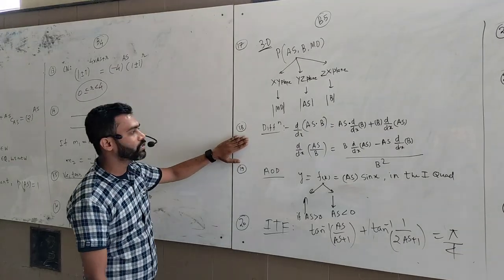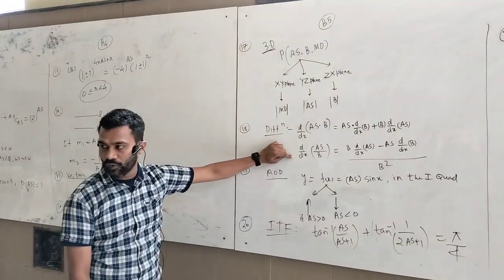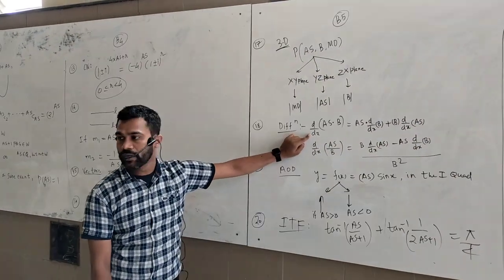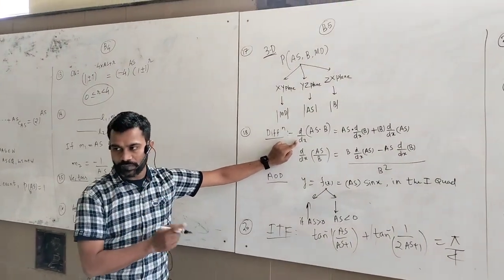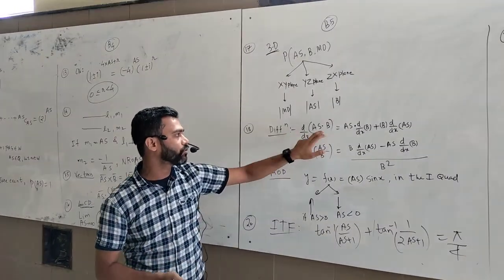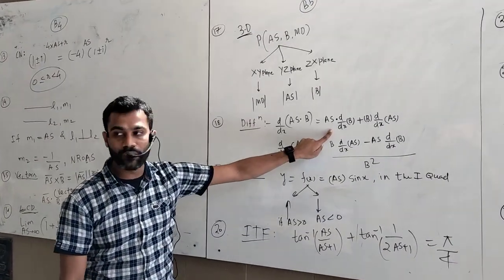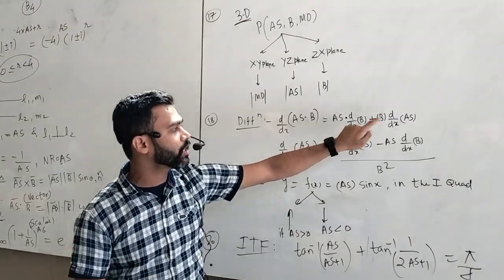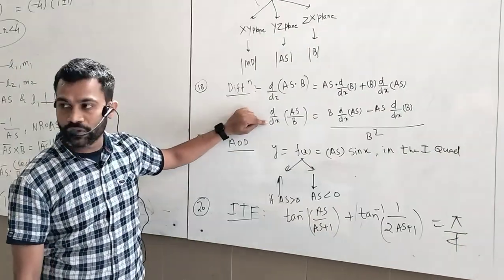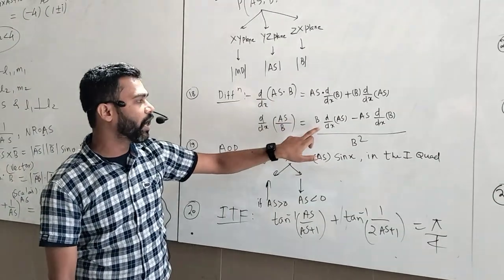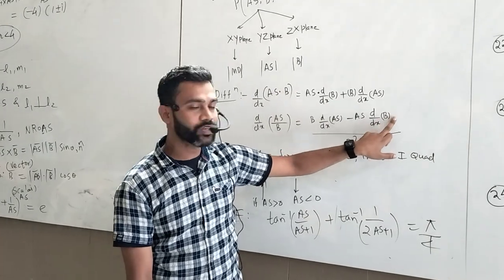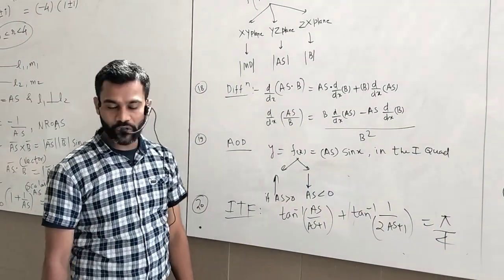Differentiation — product rule and quotient rule. Suppose there are two functions Anisar and Baya. The derivative of their product (product rule) is: Anisar × d(Baya) + Baya × d(Anisar). The quotient rule gives: [Baya × d(Anisar) − Anisar × d(Baya)] / Baya².